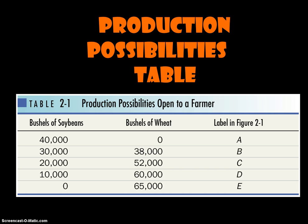This is a table of data showing the production possibilities open to a farmer. The farmer has a certain amount of land and has to decide how much to use to grow soybeans and how much to grow wheat. If he uses all of his land to grow wheat, he can produce 65,000 bushels of wheat. And if he uses all of his land to grow soybeans at point A, he can grow 40,000 bushels of soybeans. You'll notice there's not a constant tradeoff between the soybeans gained when giving up successive amounts of wheat.